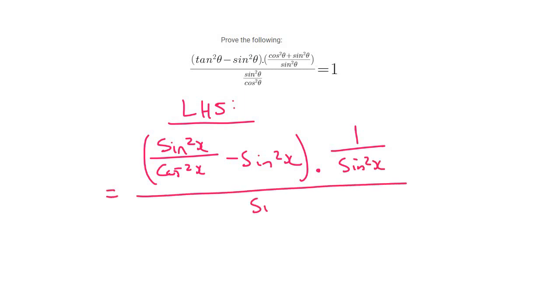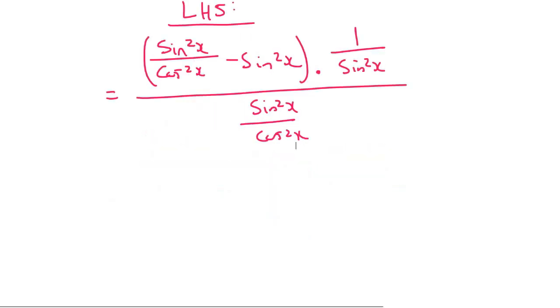Then at the bottom, we'll just have sin²x over cos²x. Now in this bracket—guys, you can't cancel like that. Remember, there's a minus over here. It's not just one term.